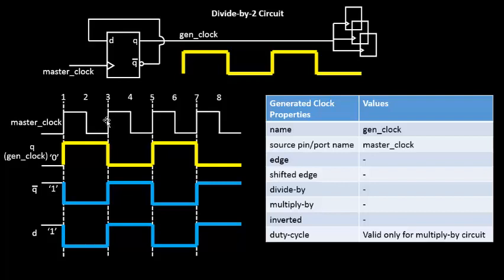We are counting the number of edges of the master clock at which the generated clock edges arrive. The rising edge comes at the first edge of the master clock. The next edge of the generated clock, which is the falling edge, comes at the third edge of the master clock. And the next rising edge comes at the fifth edge of the master clock. Identifying rise, fall, then rise in this order actually completes your generated clock waveform.